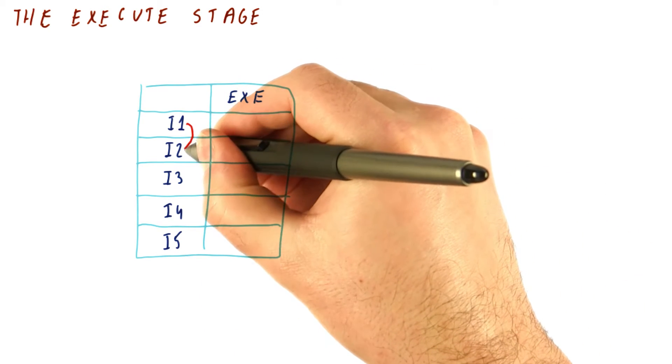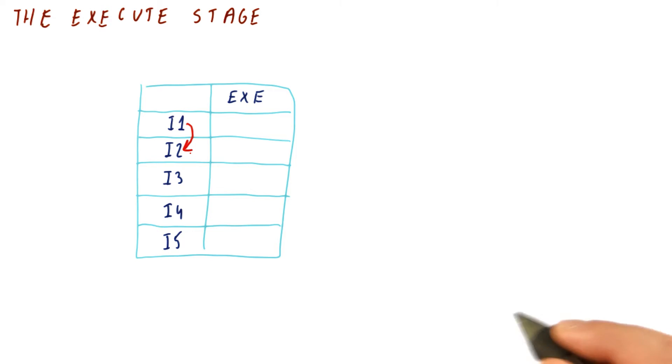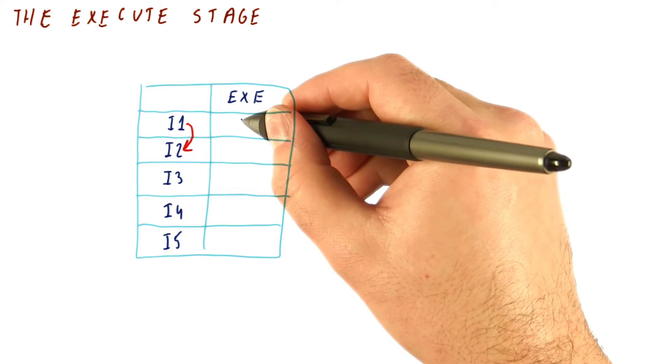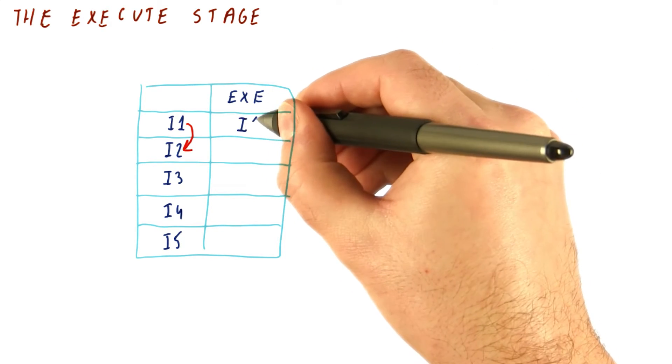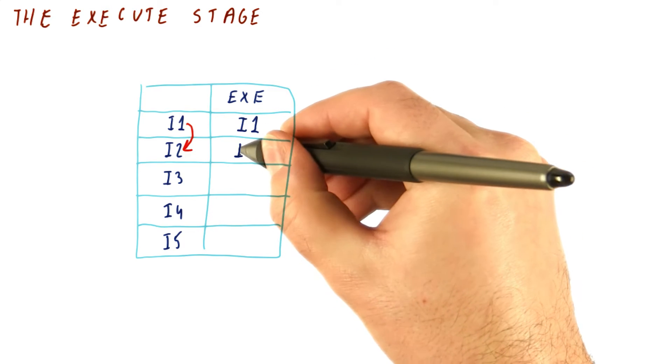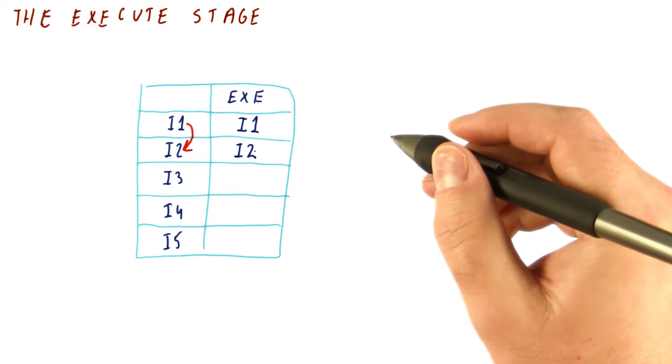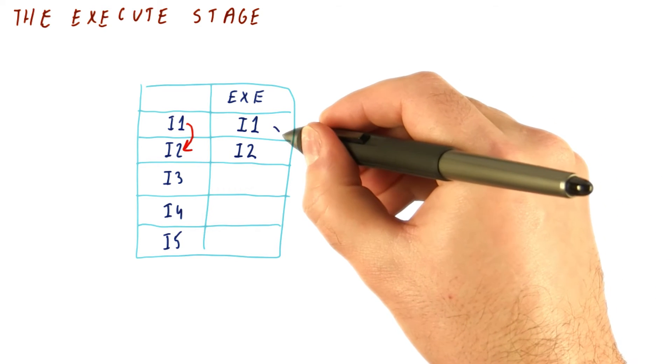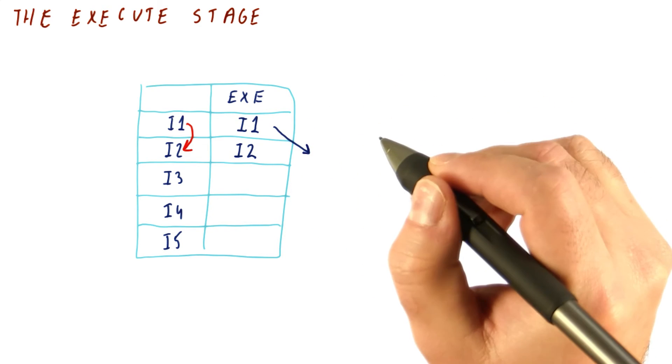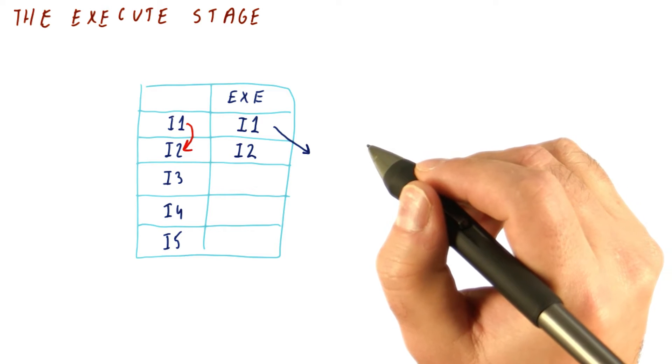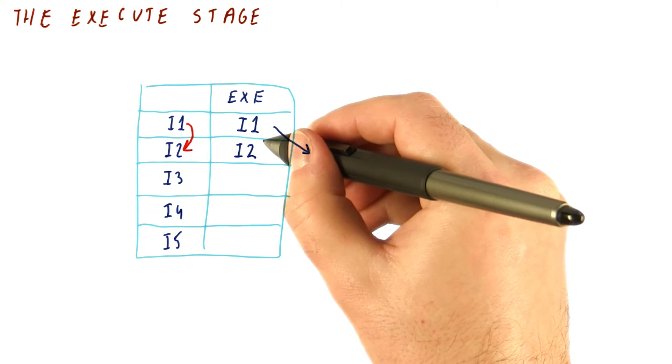Remember that there was a dependence from i1 to i2. So what would happen is we execute i1 at some point and in the same cycle we execute i2. The problem with forwarding is that it would be able to feed this value to the instruction in the next cycle, but not to an instruction in the same cycle.